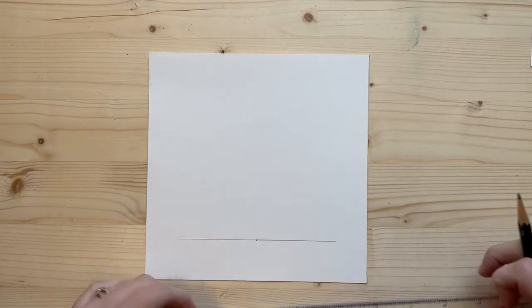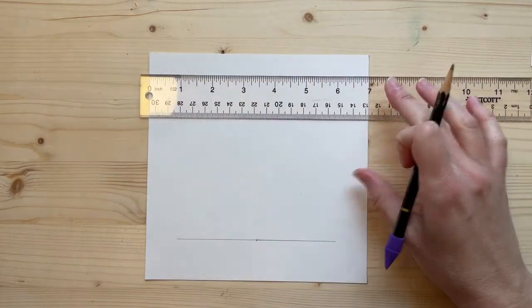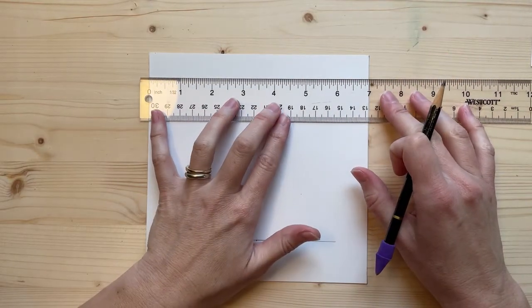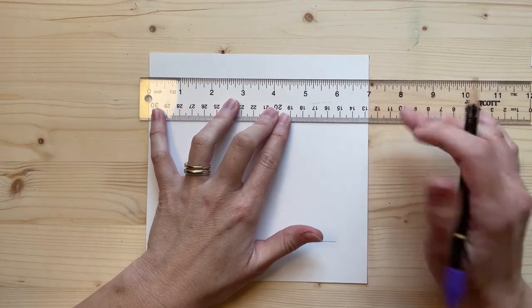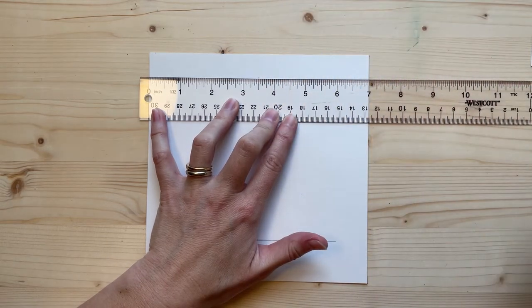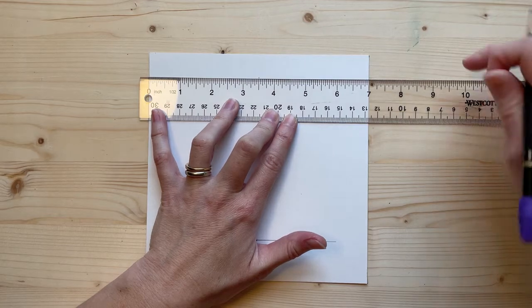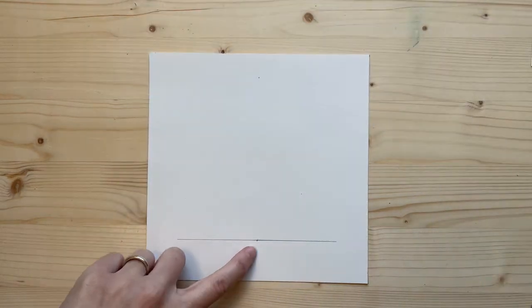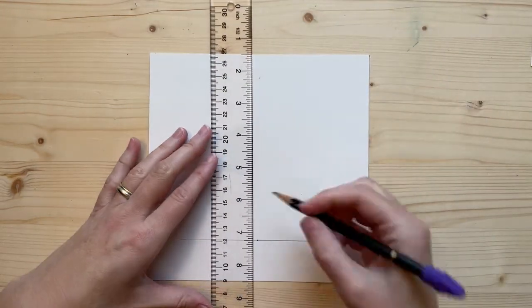I'm going to come to the top of my paper and make a mark halfway. At seven inches, I'll go to three and a half and put a little light mark. Then I'll draw a very light line from this center point to that center point.